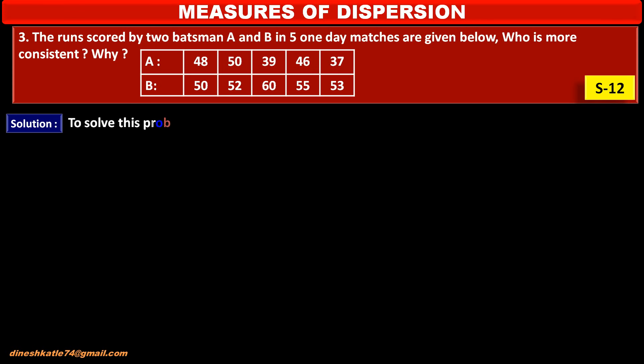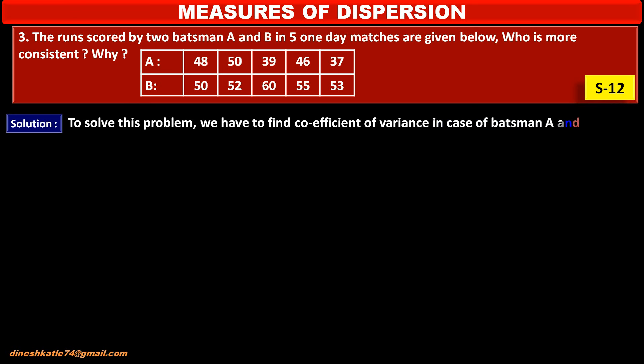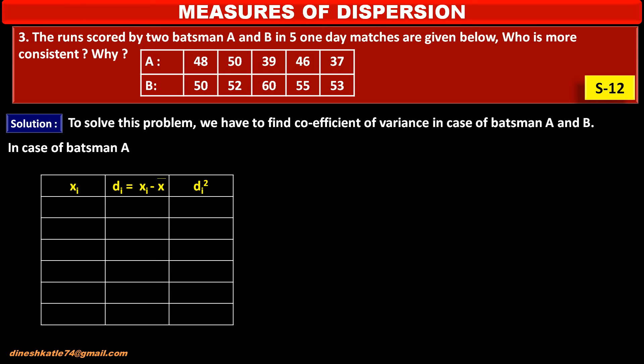To solve this problem — to check who is more consistent — we have to find the coefficient of variance for batsman A and batsman B. In the table for batsman A, the first column is for xi (runs scored), the second column is for deviation di which equals xi minus mean x̄, and the third column is di squared.